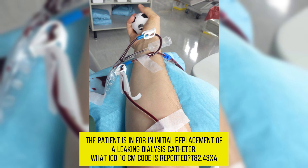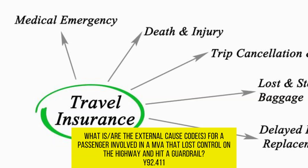The patient is in for an initial replacement of a leaking dialysis catheter. What ICD-10-CM code is reported? T82.43XA.